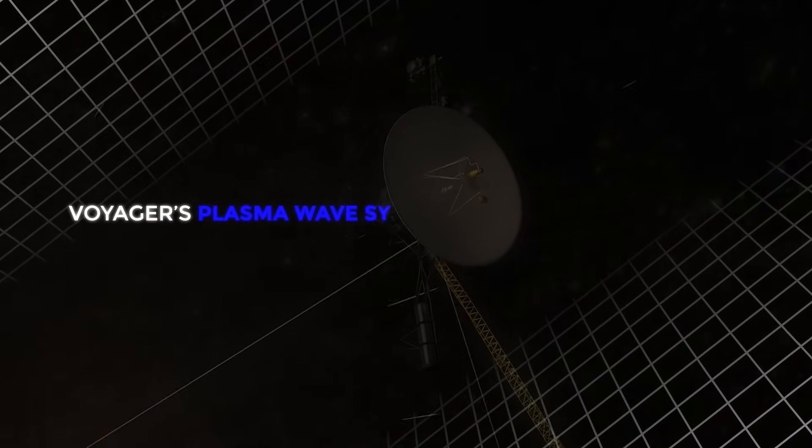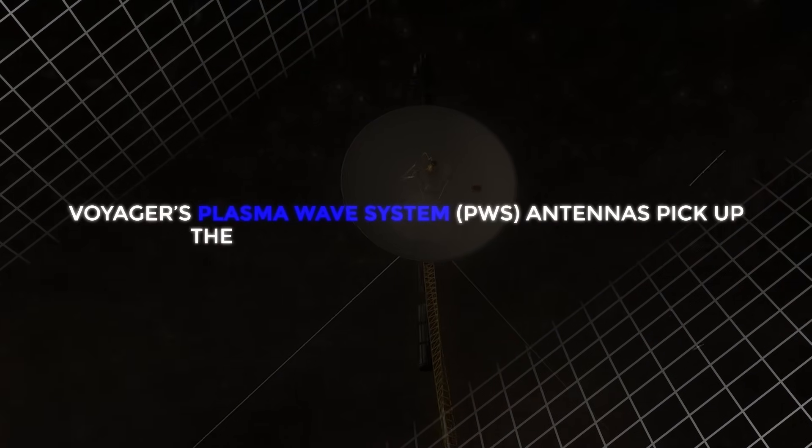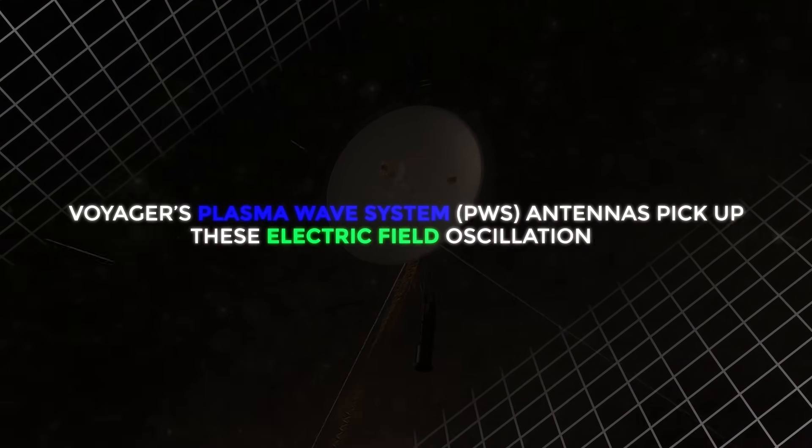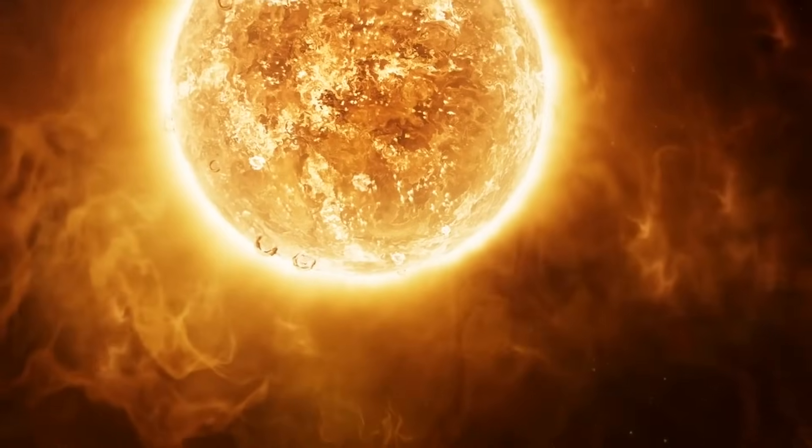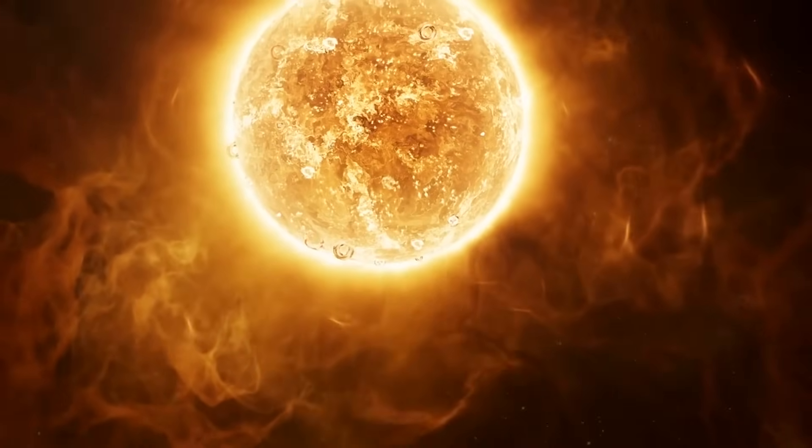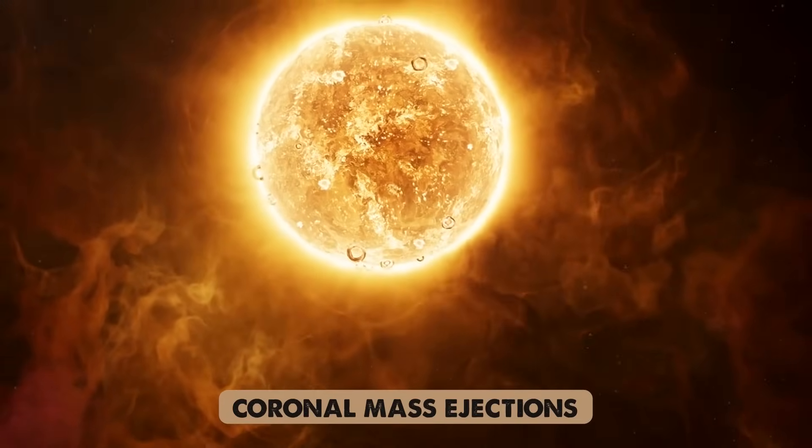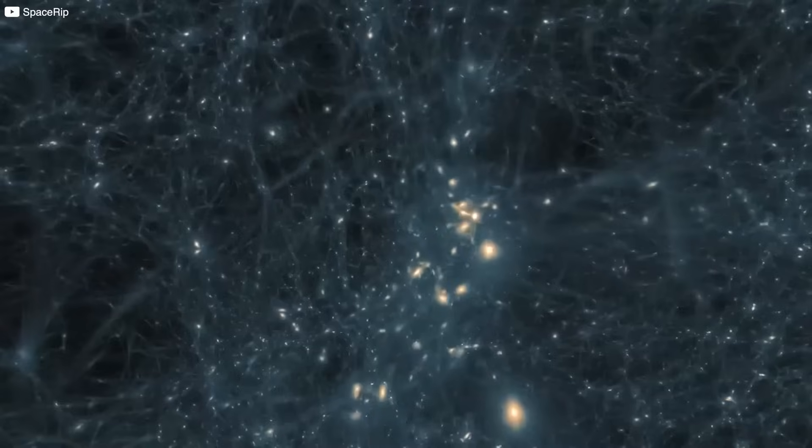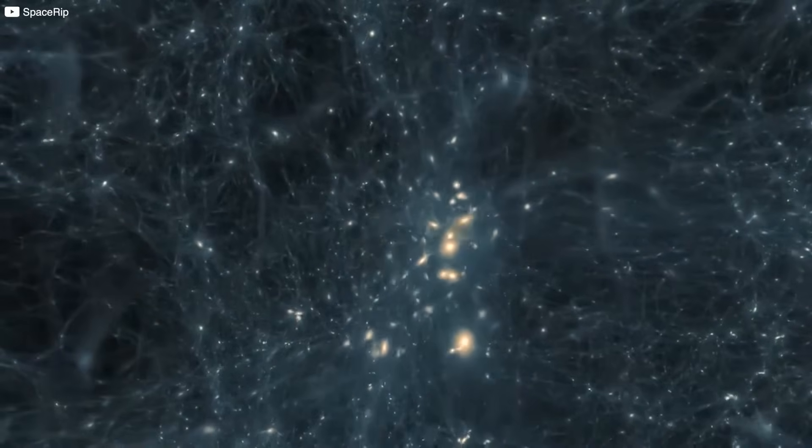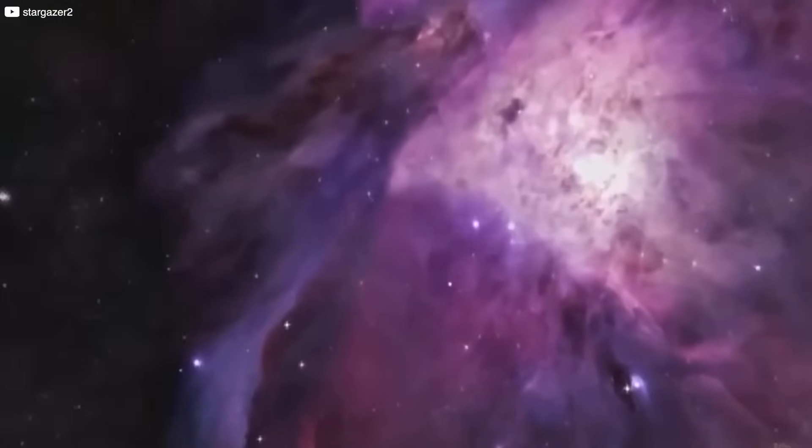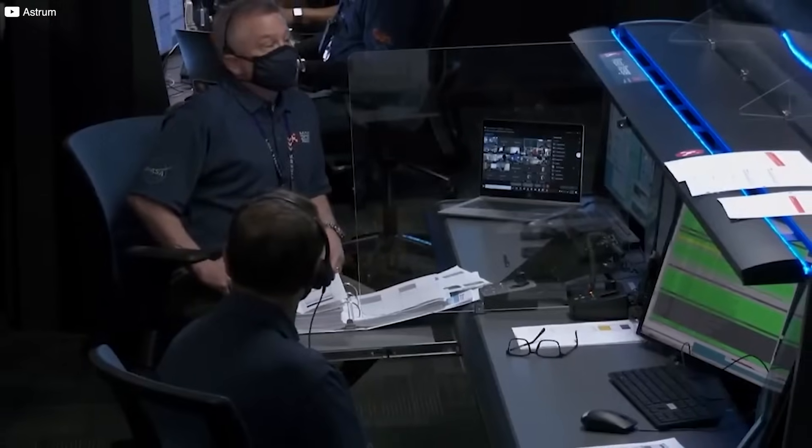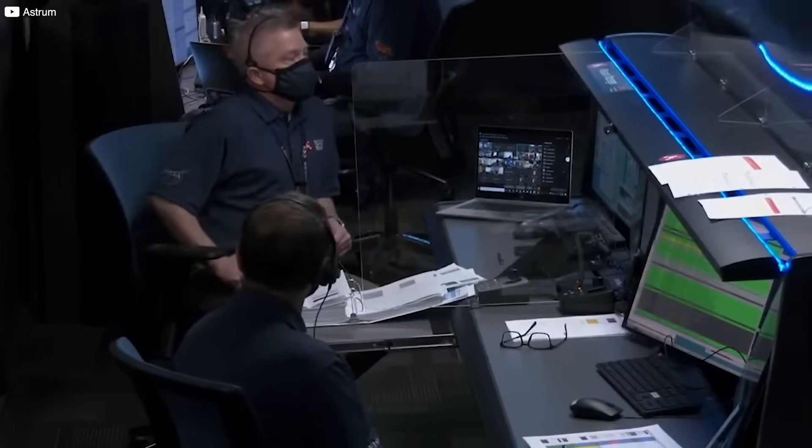Voyager's plasma wave system, PWS, antennas pick up these electric field oscillations. While Voyager had previously detected similar plasma waves, those were brief bursts triggered by solar shock waves, like coronal mass ejections reaching Voyager and momentarily disturbing the interstellar plasma. These bursts were valuable because their frequency revealed the plasma's density, helping scientists map the environment beyond the heliosphere.